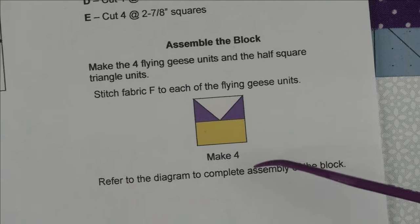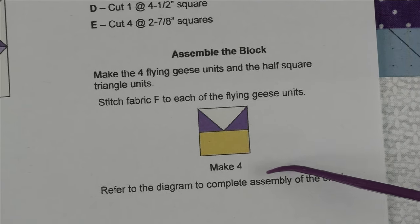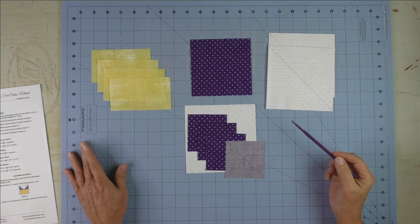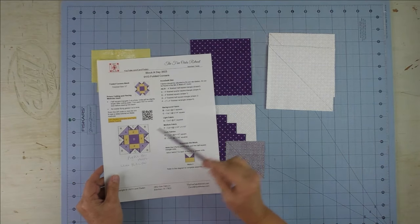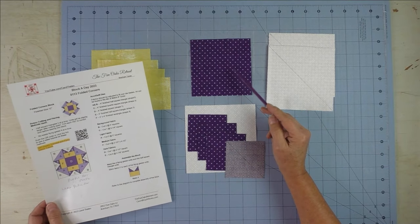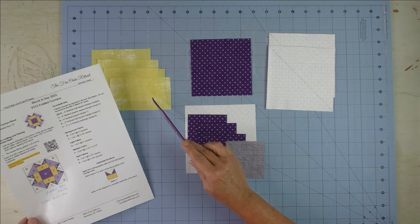Now here are the pieces all cut. If we start from the center of the block, we have the dark fabric in the center, and framing the dark fabric are the yellow.